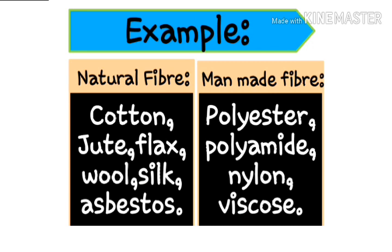Examples of natural fiber include cotton, jute, flax, wool, silk, and asbestos. Examples of man-made fiber include polyester, polyamide, nylon, and viscose. That's all for today. Thank you everyone for staying with me.